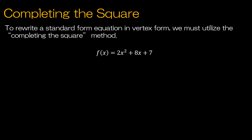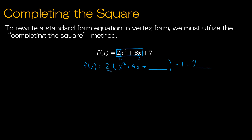Now that we know how helpful vertex form can be, let's talk about how to turn a standard form equation into vertex form using the completing the square method. First, rewrite the equation so the x² term and the x term are together, leaving the constant on the outside. If the leading coefficient a is not 1, factor it out. So dividing through by 2 gives x² + 4x inside, then leave a plus blank on the inside and a minus 2 times blank on the outside.